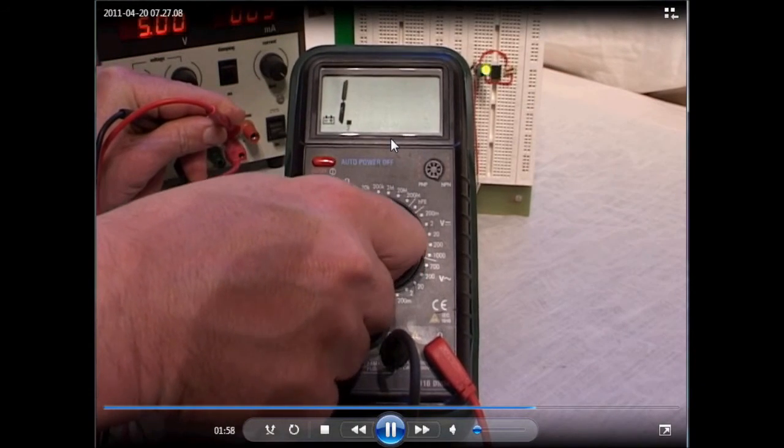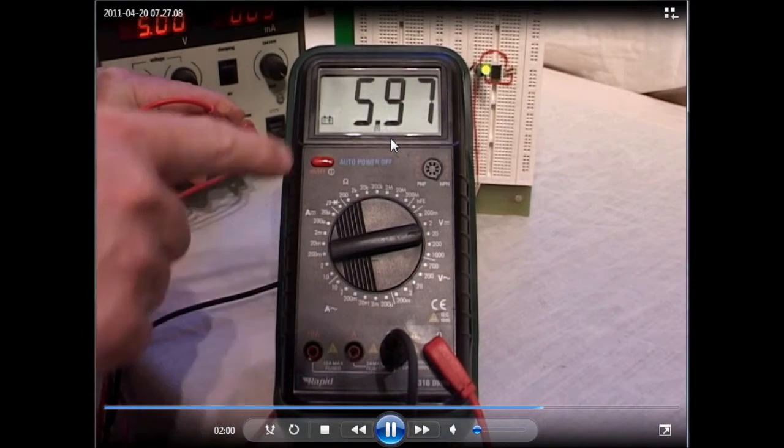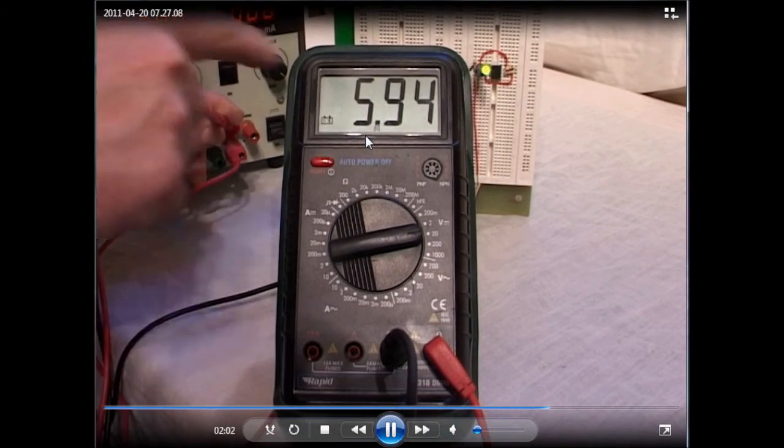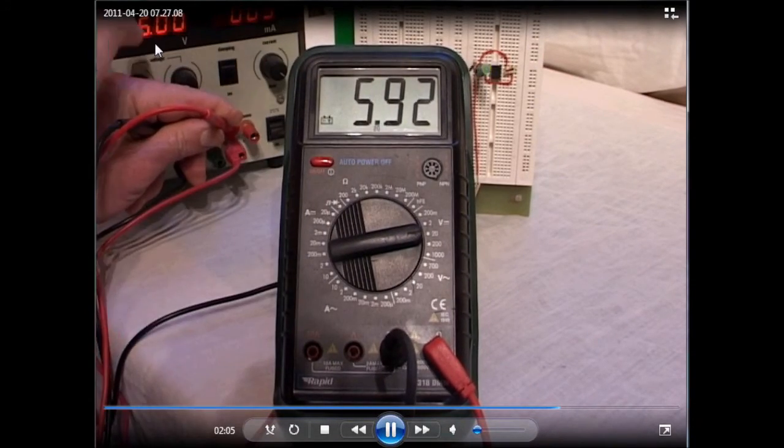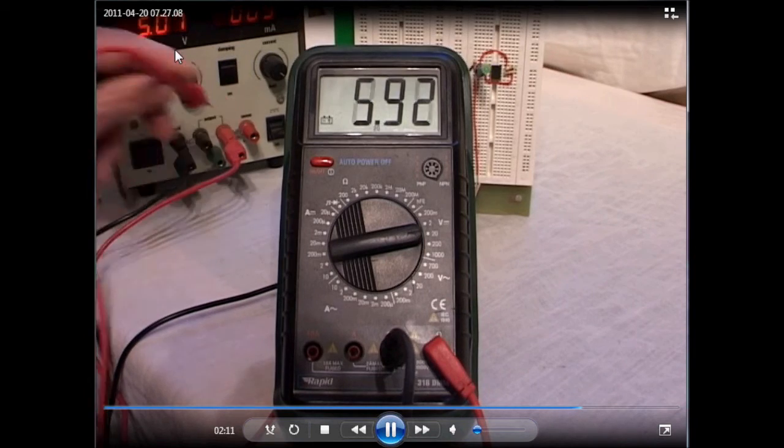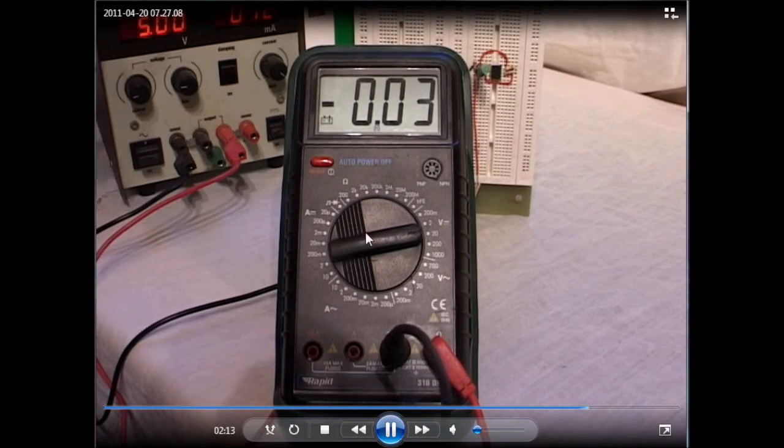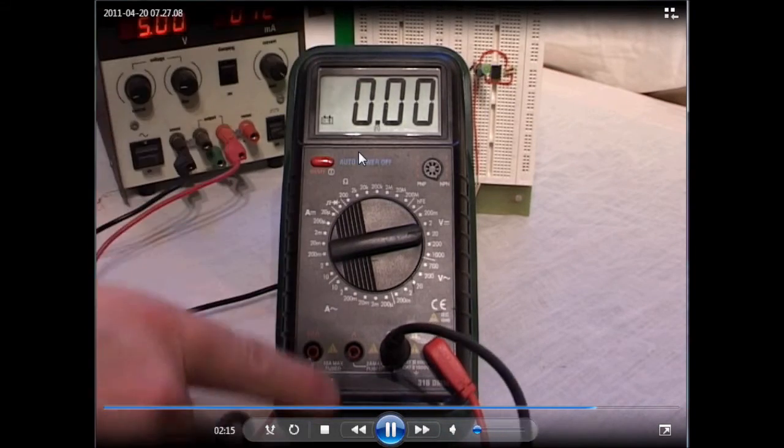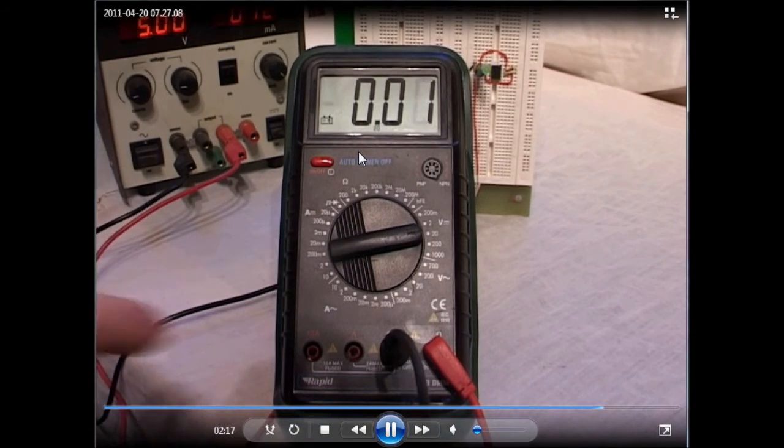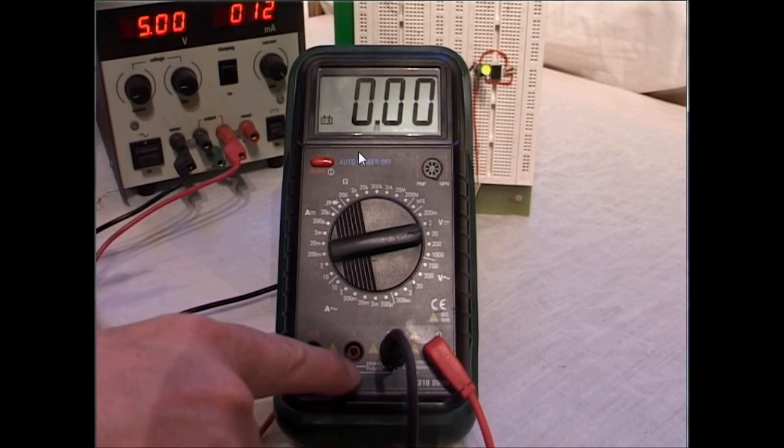Once again, we move upwards until you get a reading. This time we get 5.94 volts, and you can see that's quite a bit different from what the power supply is telling us. That happens quite often with power supplies. It's very important that you check the voltage to make sure it agrees with what you expect it to be.